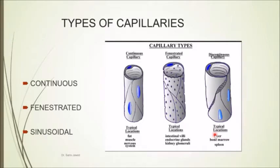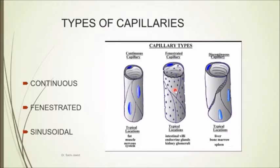There are continuous capillaries where the cells are opposed to one another and joined with the help of tight junctions. Then there are fenestrated capillaries — you can see that there are small fenestra, which means windows. The word fenestration refers to the presence of windows, so there are small openings in these capillaries.